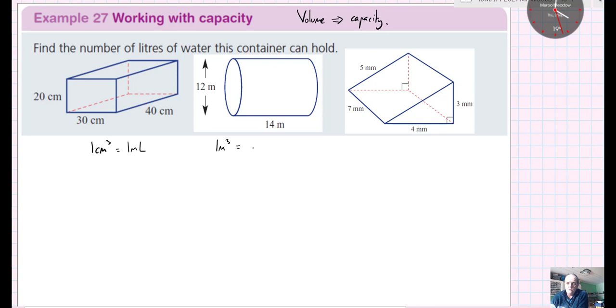One cubic meter is equivalent to one kiloliter or 1,000 liters.